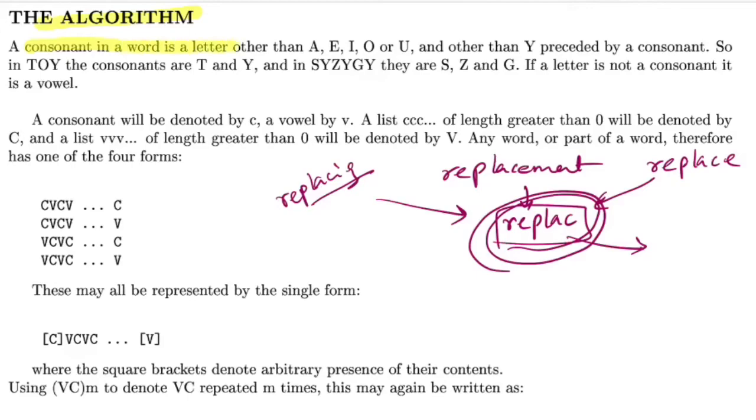Let's start the algorithm. A consonant in a word is a letter other than A, E, I, O, U, and other than Y preceded by a consonant. Toy has consonants T and Y. The Y in toy is acting as a consonant because it's preceded by a vowel, but in another case, Y acts as a vowel because it's preceded by a consonant.